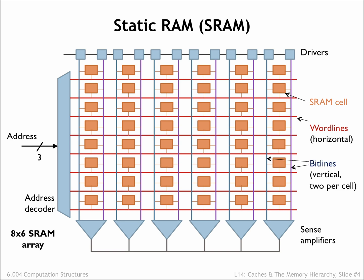During read operations, the bit lines carry the analog signals from the enabled bit cells to the sense amplifiers, which convert the analog signals to digital data. During write operations, incoming data is driven onto the bit lines to be stored into the enabled bit cells.